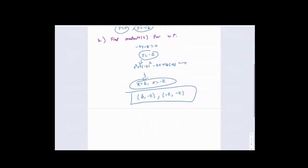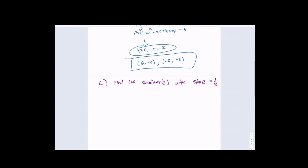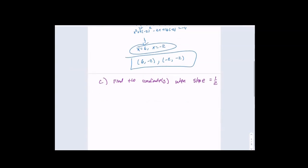The next one is a little bit different. Find the coordinate or coordinates when the slope is equal to 1/2. This is very similar to the previous ones — when they talk about slope or tangents, all of that information is always about the derivative. It's giving me a relationship of the derivative. The concept is much the same as what we learned previously.